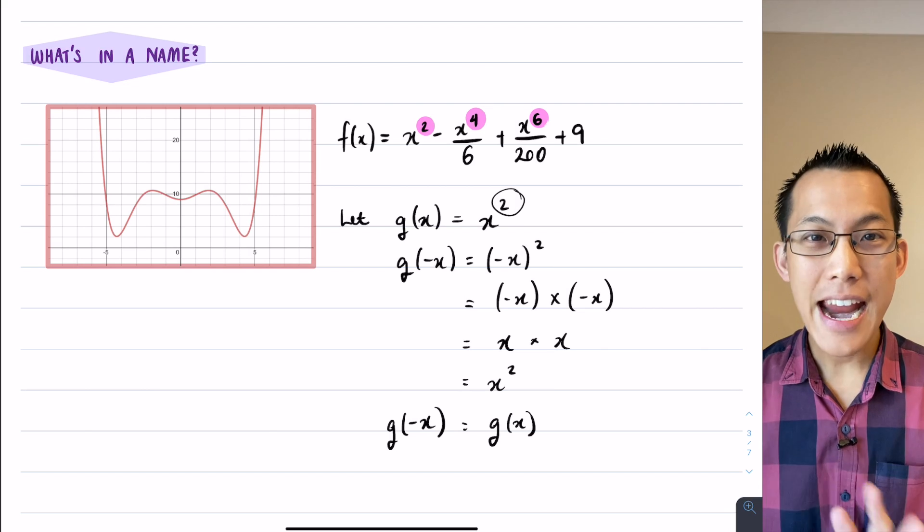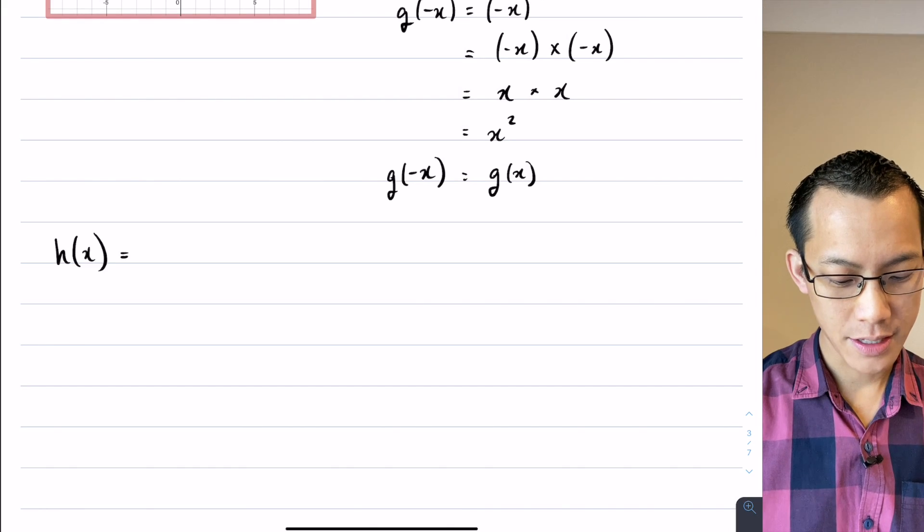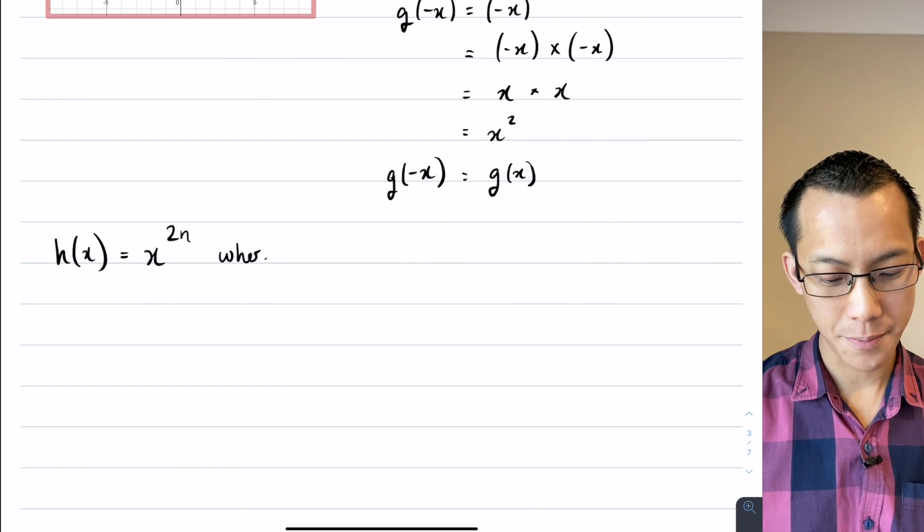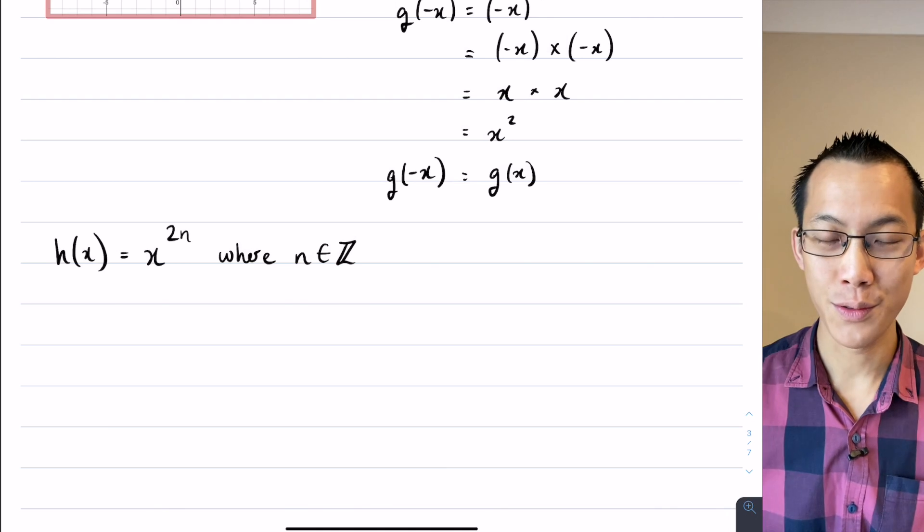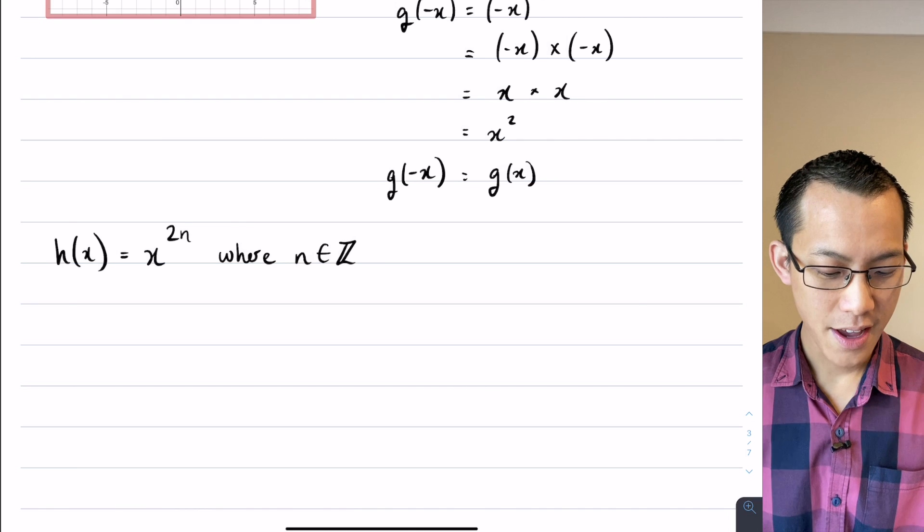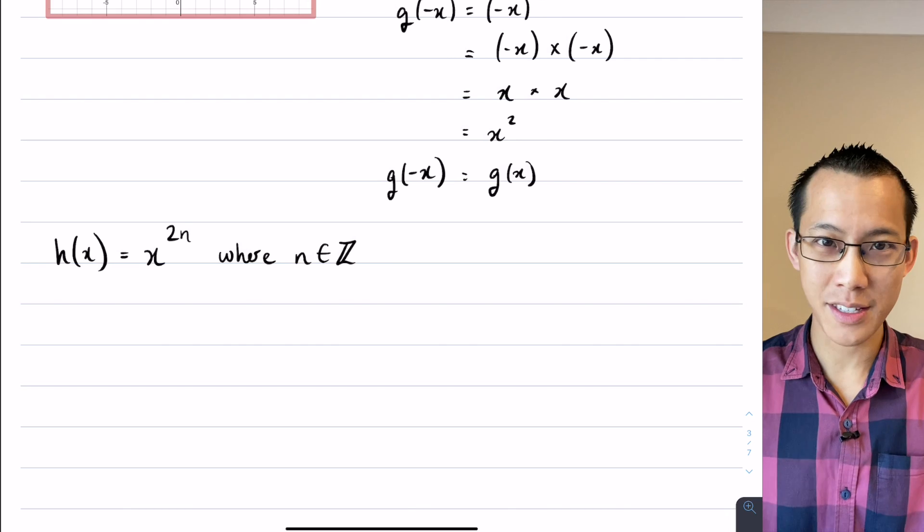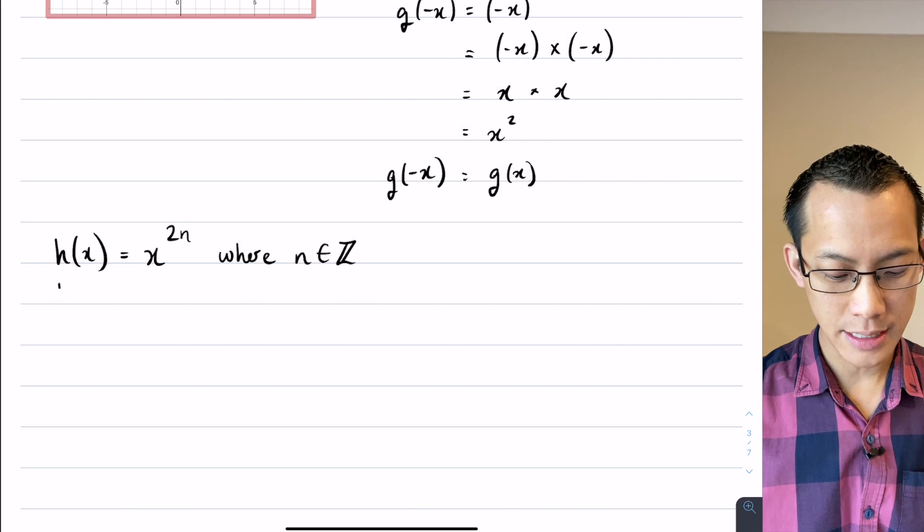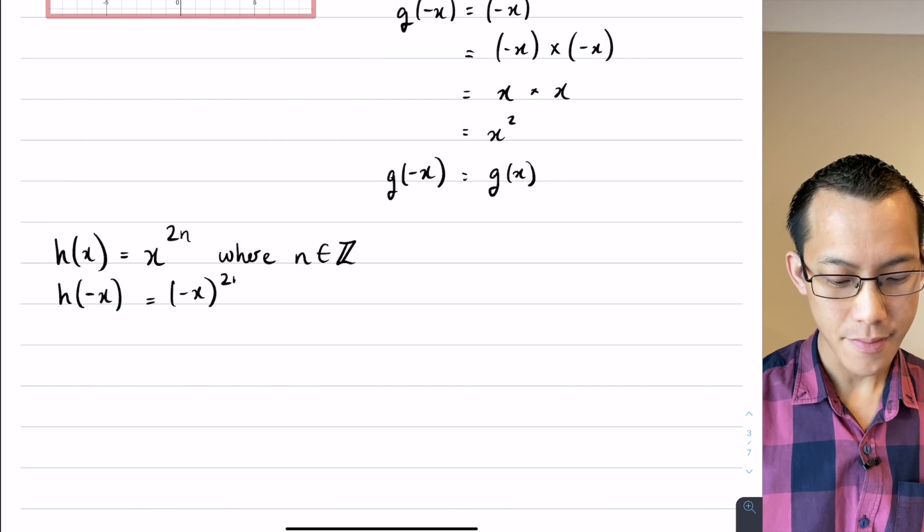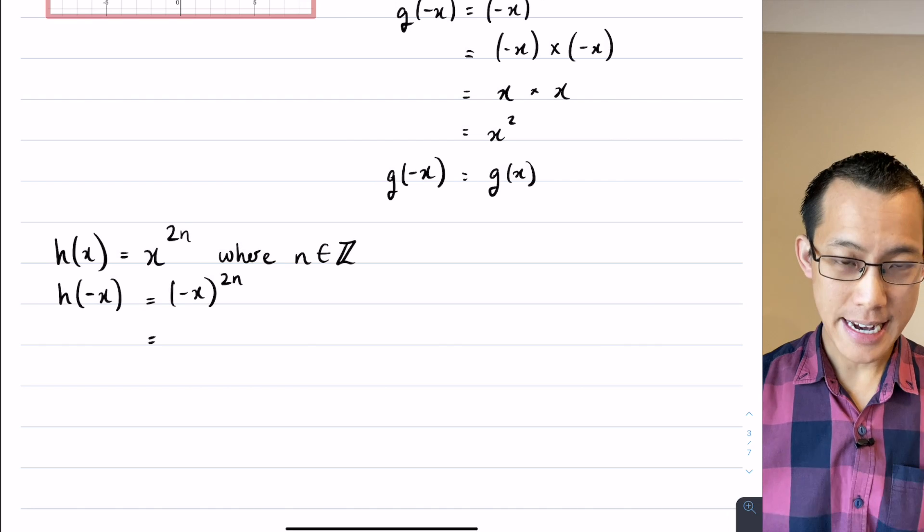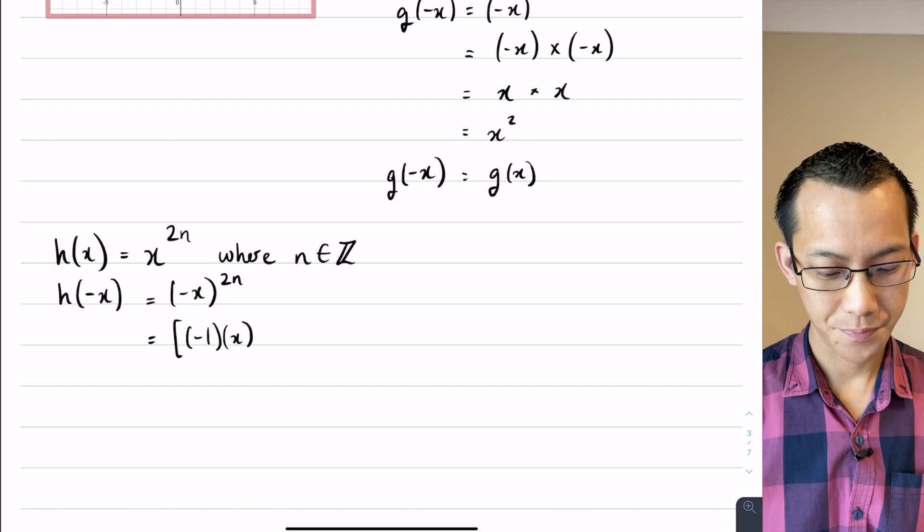And we can prove this for anything with an even power. Let's suppose I had h of x and it was something like x to the power of 2n where n is a whole number. So I'm going to write that with some fancy notation here which just means n belongs to the set of numbers that are all integers. Now how would I go about proving that this is also going to be even? Well I'll do it in the same way that I did it with that function g of x. I'm going to test out h of negative x. Okay what am I going to get here? Well I'll do the substitution like so and if you look closely at this I'm going to use my index laws.